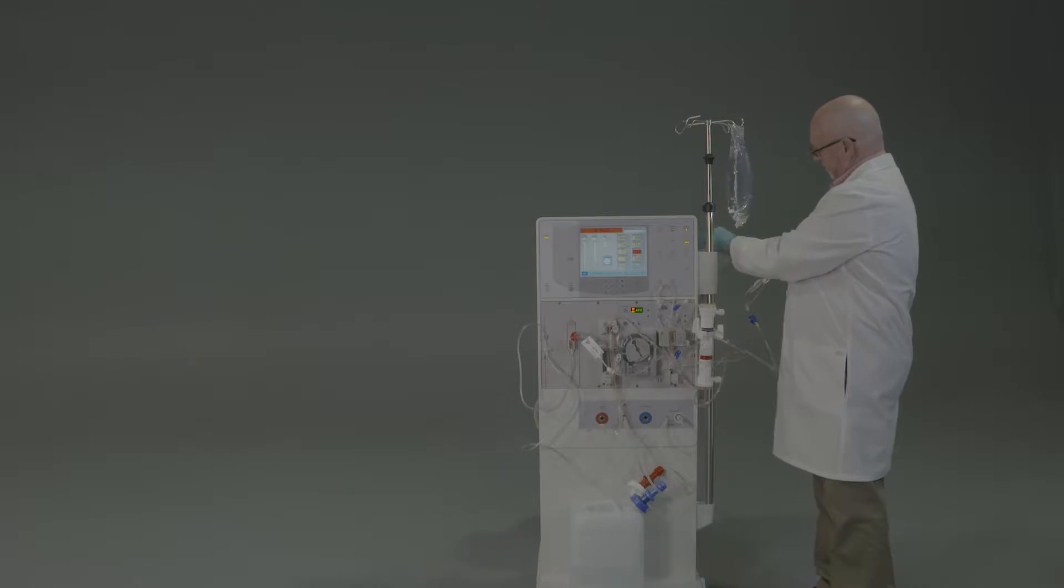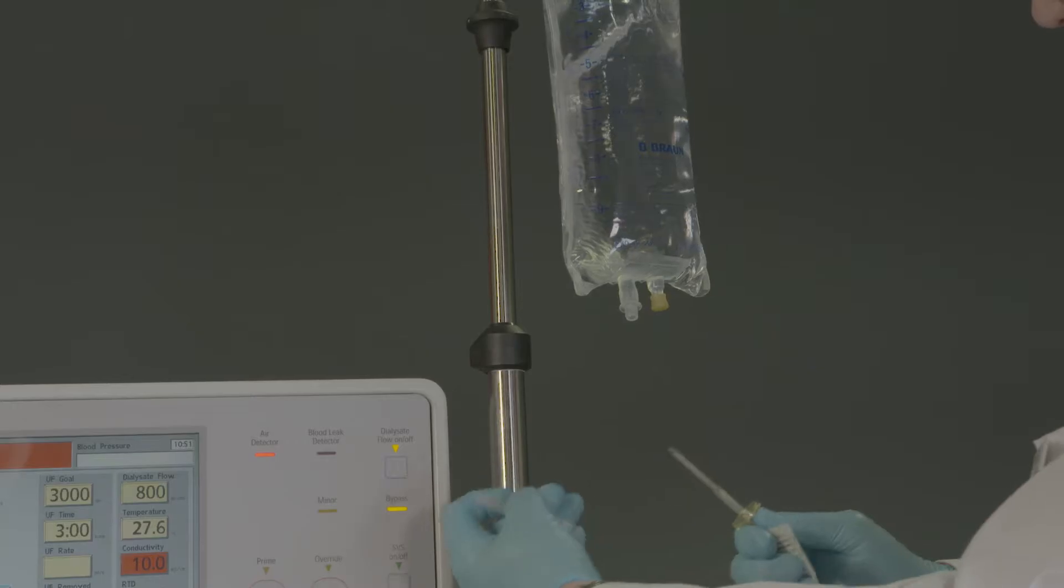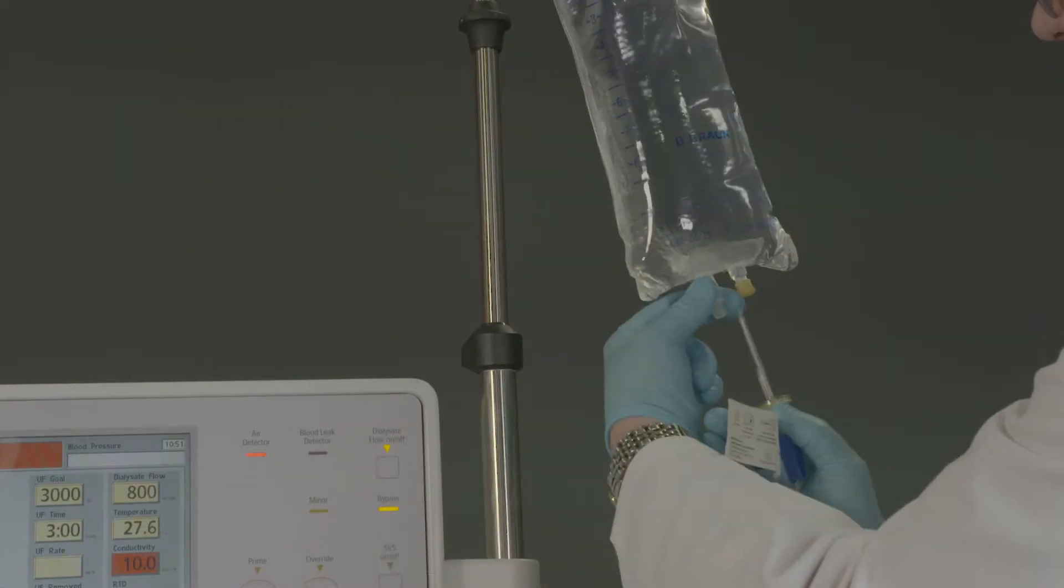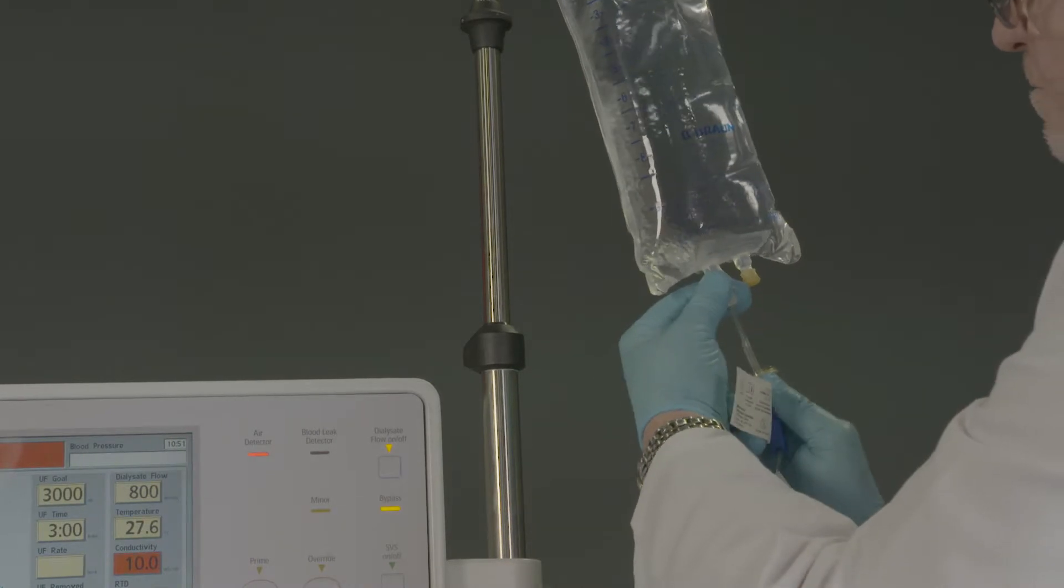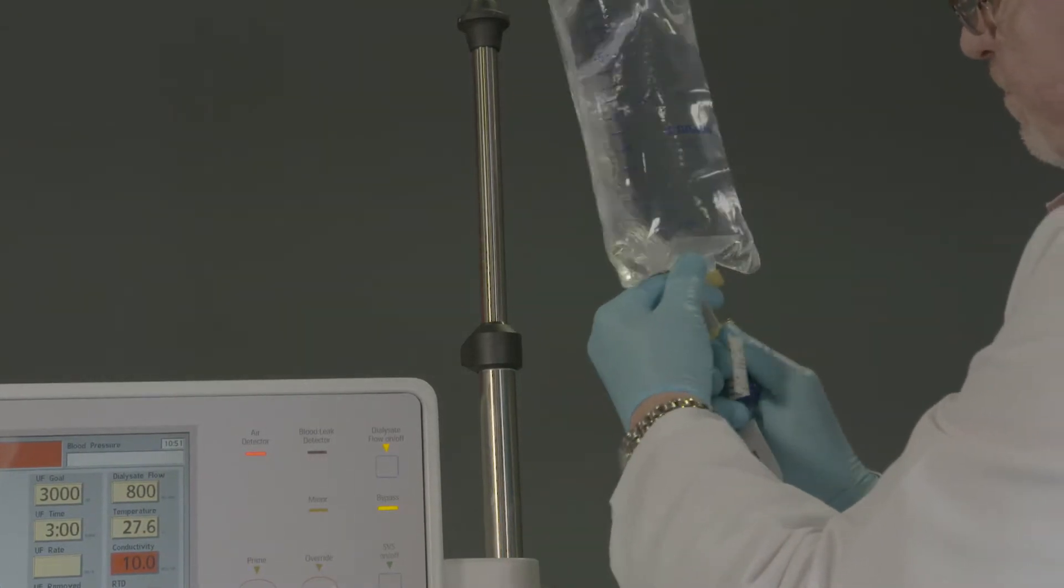The first step is to ensure that the dual spike is fully inserted to the disc. If you need to insert further, use a back-and-forth insertion motion, which will prevent tubing kinks.